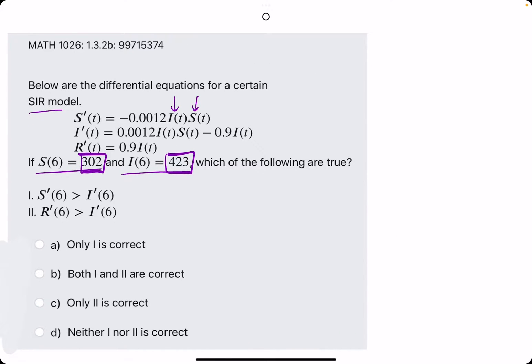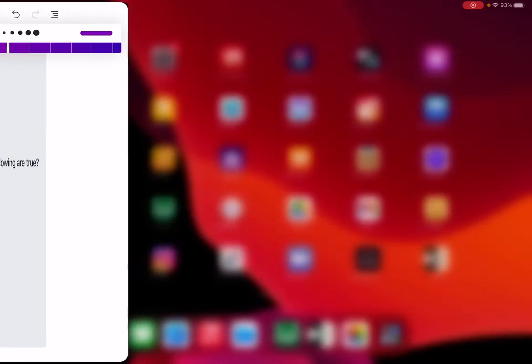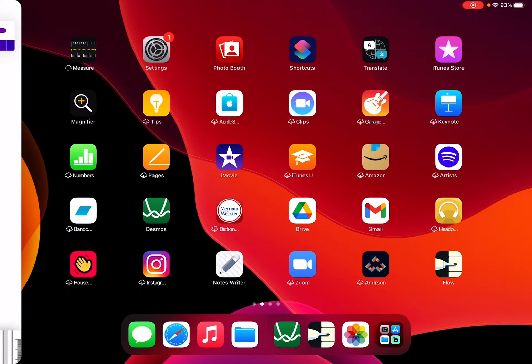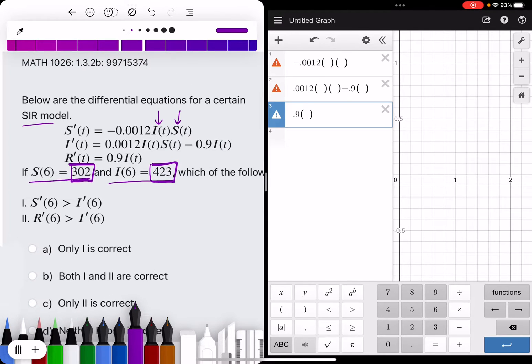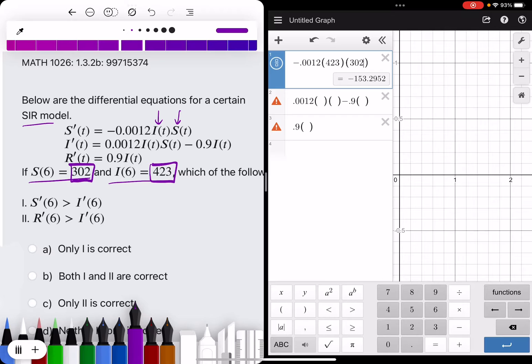So we're going to try something fun here and look at Desmos while we're doing this. And I have the equations somewhat set up. So again, we are plugging in 423 for I and 302 for S.